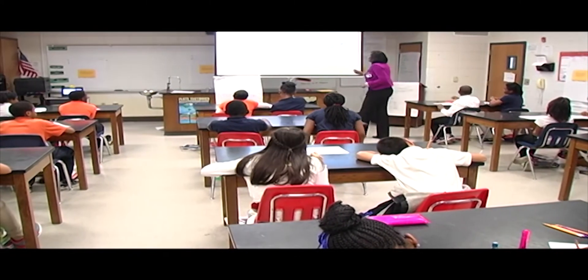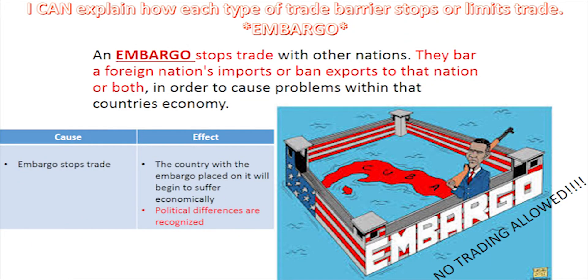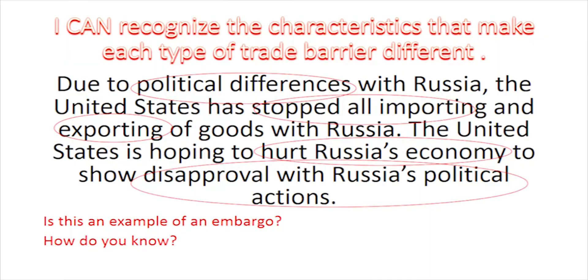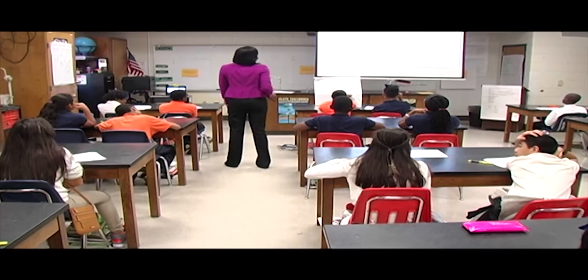Here's a real example: the United States and Cuba. Cuba is very close, so trading would be easy. But Cuba has a communist government, and the United States does not agree with communism — so we put an embargo up. These walls represent the stopping of trade. Can anything get into Cuba? No. Can anything get out of Cuba? No. We've stopped trading with them — nothing's going in and nothing is coming out. That's a visual representation of an embargo. Now take 30 seconds and discuss with your partner: is this scenario — due to political differences with Russia, the United States has stopped all importing and exporting of goods with Russia — an example of an embargo?